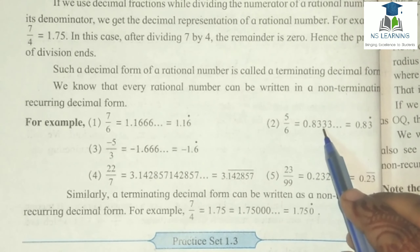When we divide 7 by 6, it gives 1.1666... where 6 is repeating more than once, so we put a dot over it. For 5 by 6, we get 0.8333..., where 3 is repeating, so we put a dot on 3. For 22 divided by 7, we get 3.142857142857..., where 142857 is repeating, so we use a non-terminating recurring notation.